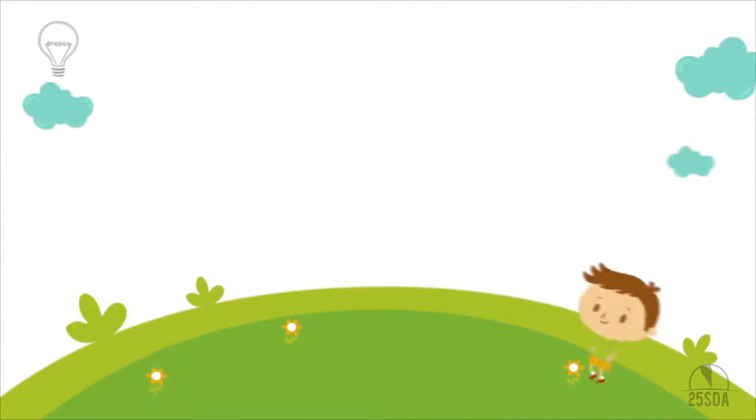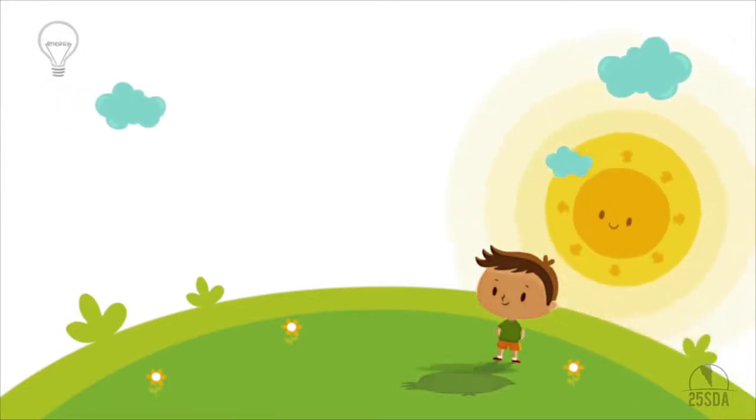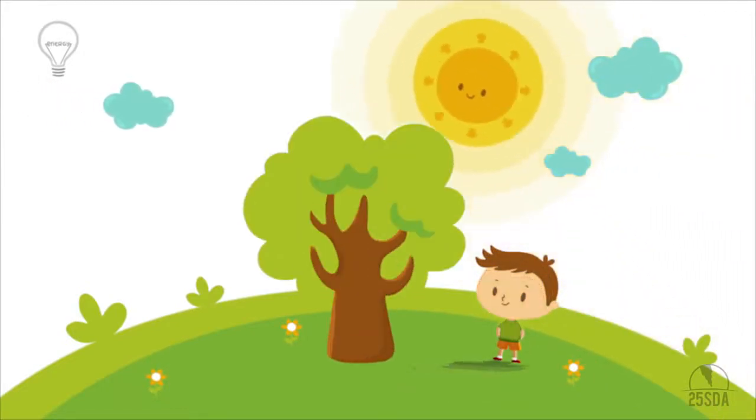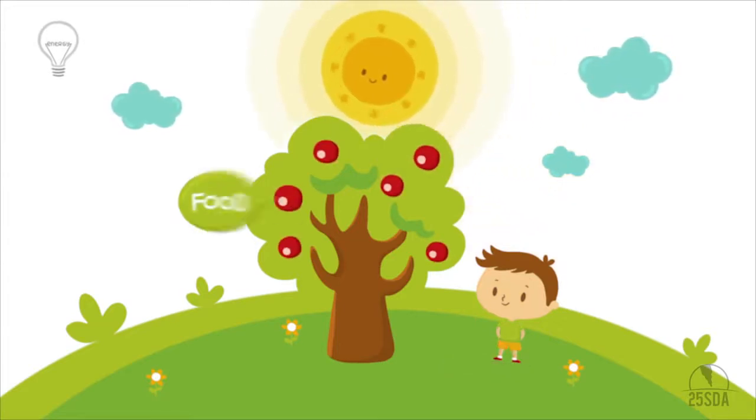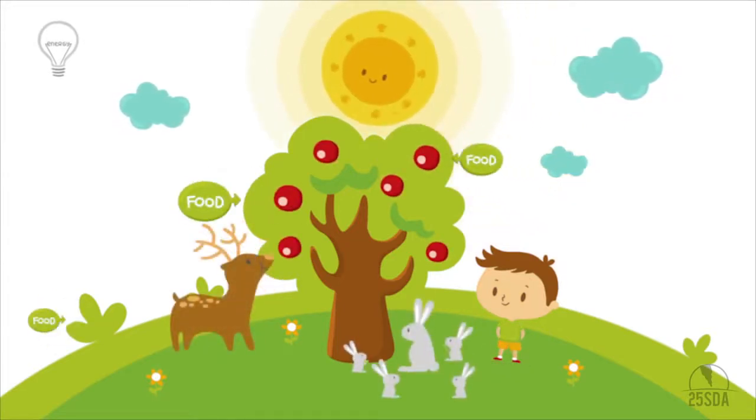When we're outside all day long, we get light from the sun. Plants can turn sunlight into useful energy which makes them grow. Food gives energy to animals and humans so they can live.